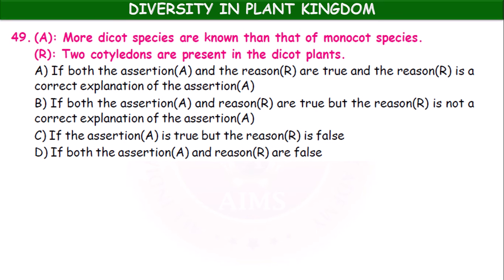Next: assertion — more dicot species are known than that of monocot. Reason — three veins are present in dicot plants. Here both assertion and reason are true, but the reason is not the correct explanation of the assertion.